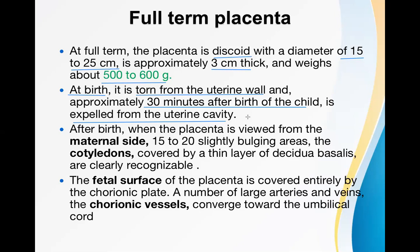When the full-term placenta is viewed from the maternal side, we can see around 15 to 20 slightly bulged areas called cotyledons. These cotyledons are covered by a thin layer of decidua basalis, which is clearly recognizable since decidua basalis forms the maternal part of the placenta.